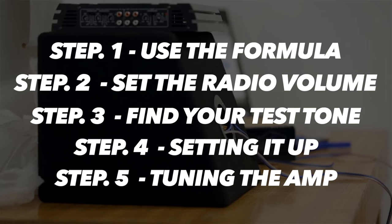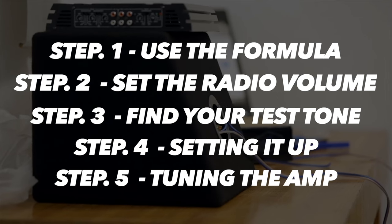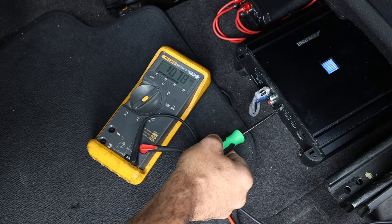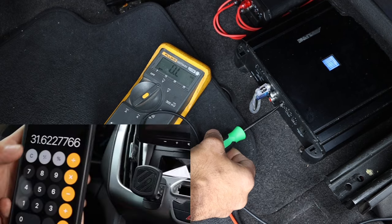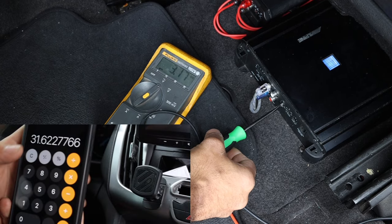Step number five: tuning the amp. Set your meter to the AC voltage setting and turn up the gain until you get to your target number. And that's it.